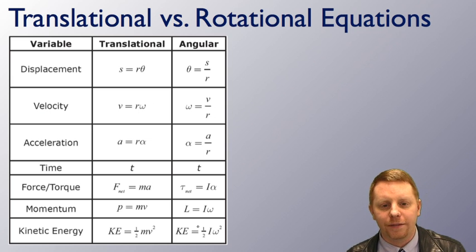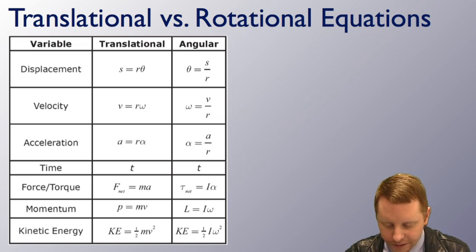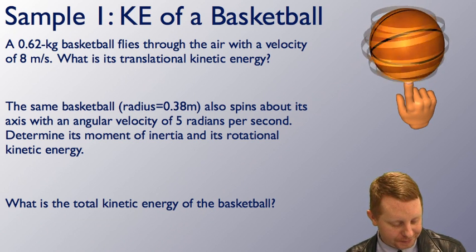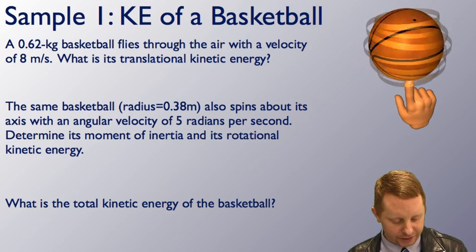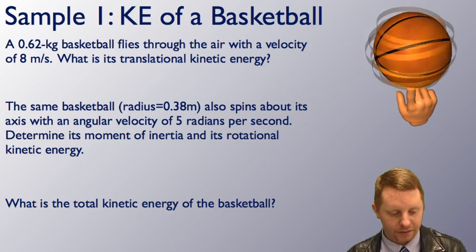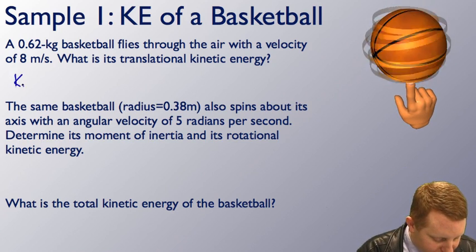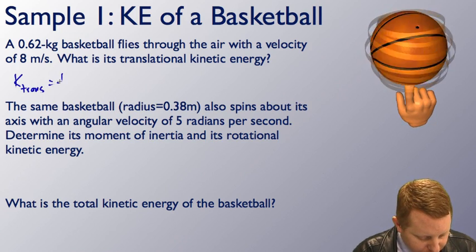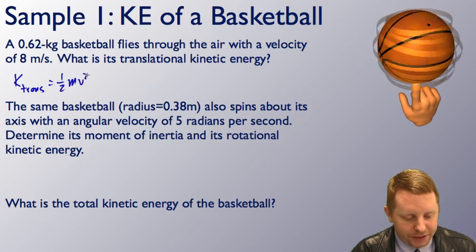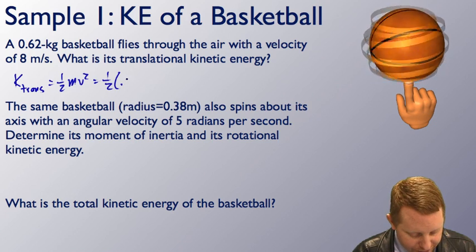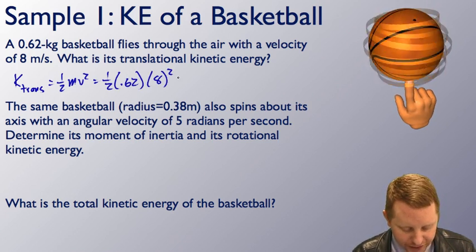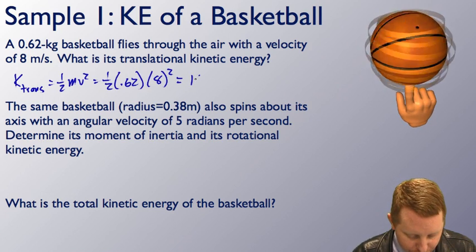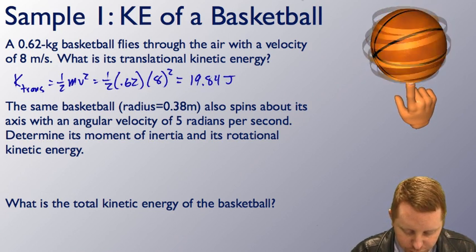Let's apply this. A 0.62 kilogram basketball flies through the air with a velocity of 8 meters per second. What is its translational kinetic energy? The translational kinetic energy is one-half mv squared, which is one-half times 0.62 kilograms times 8 meters per second squared, for a total of about 19.84 joules.